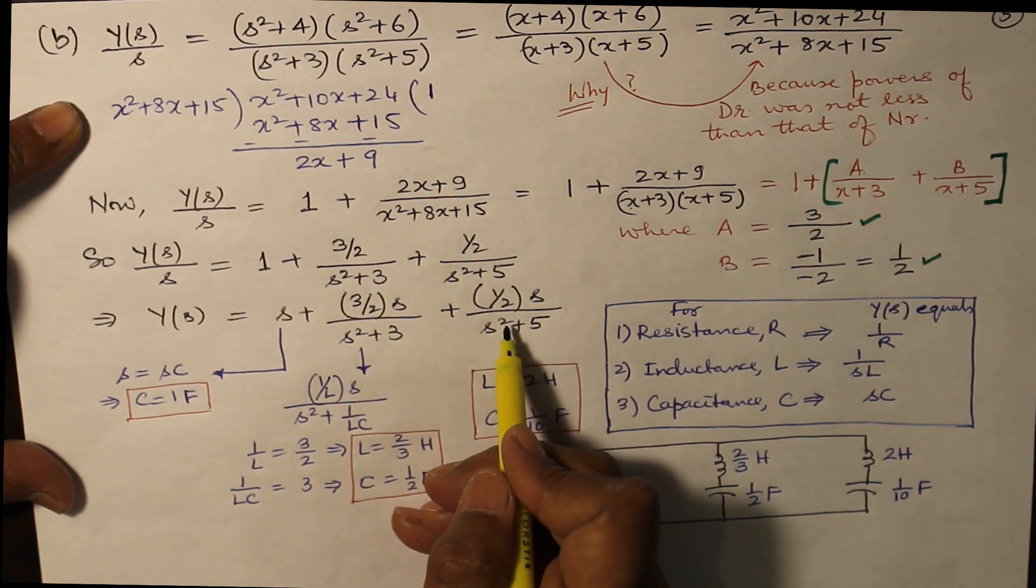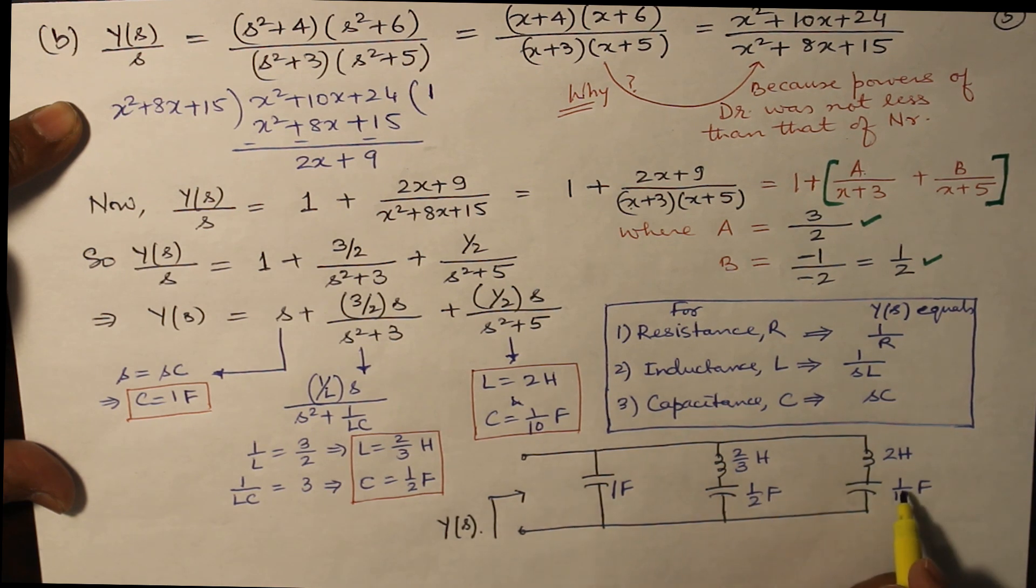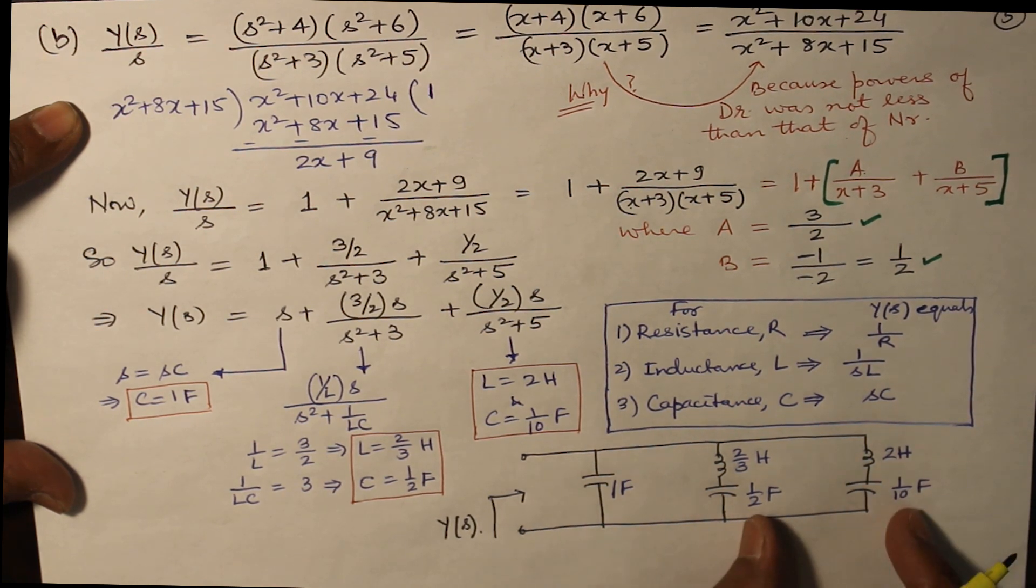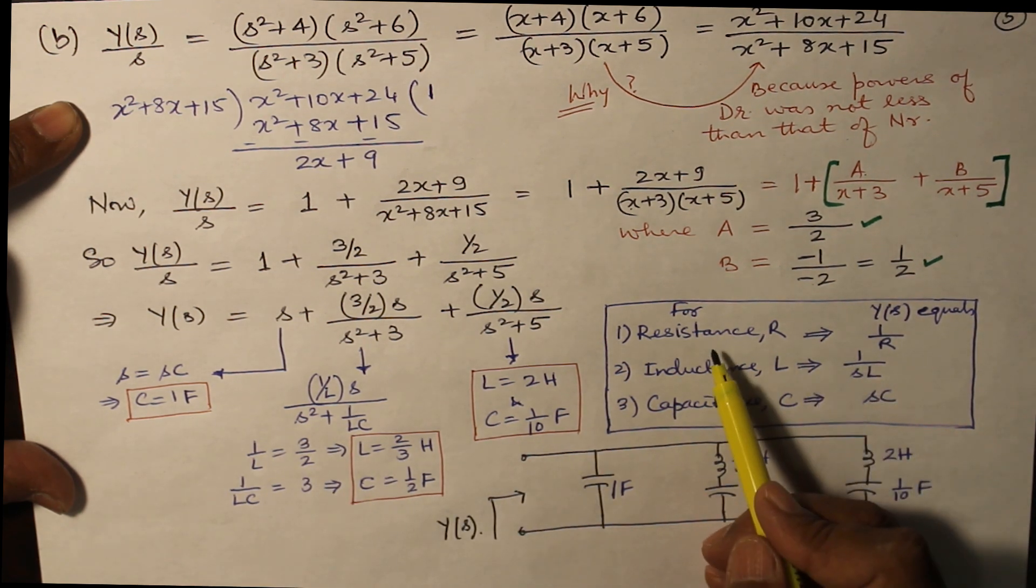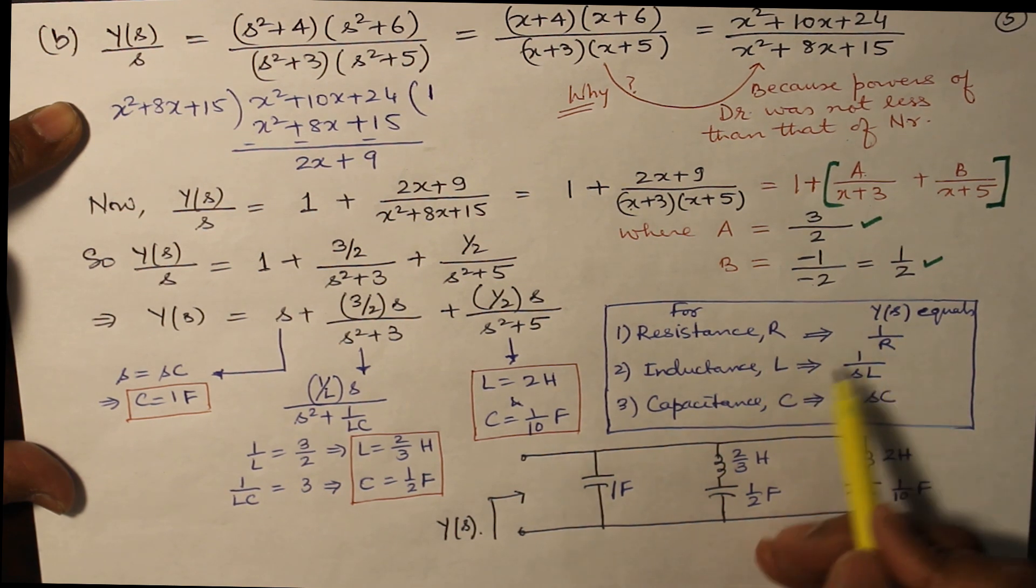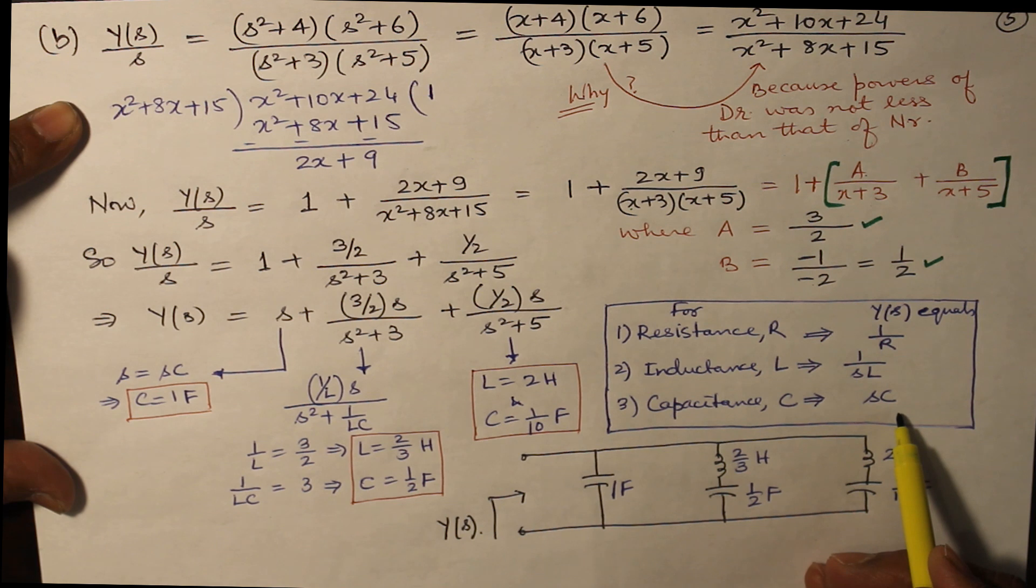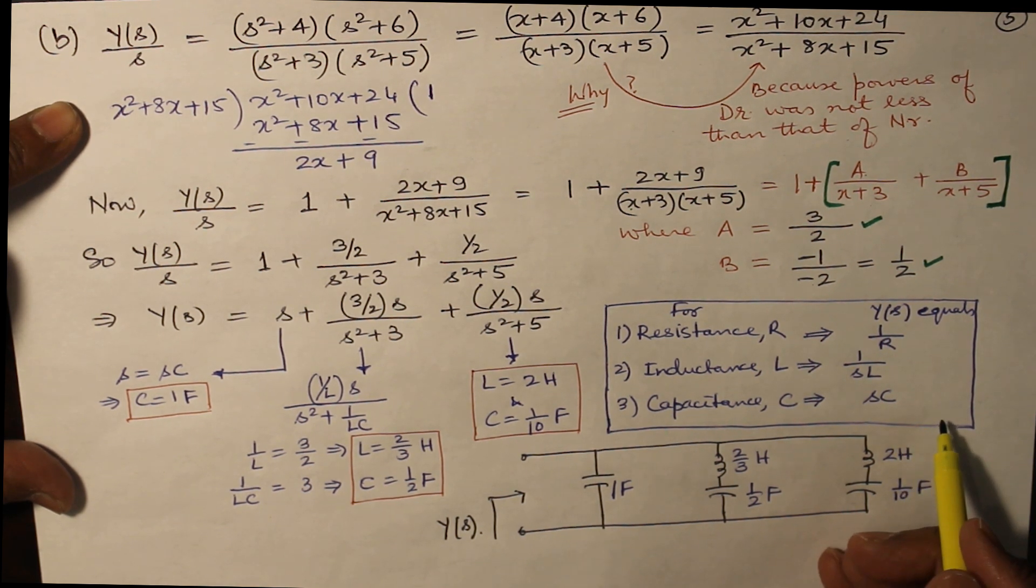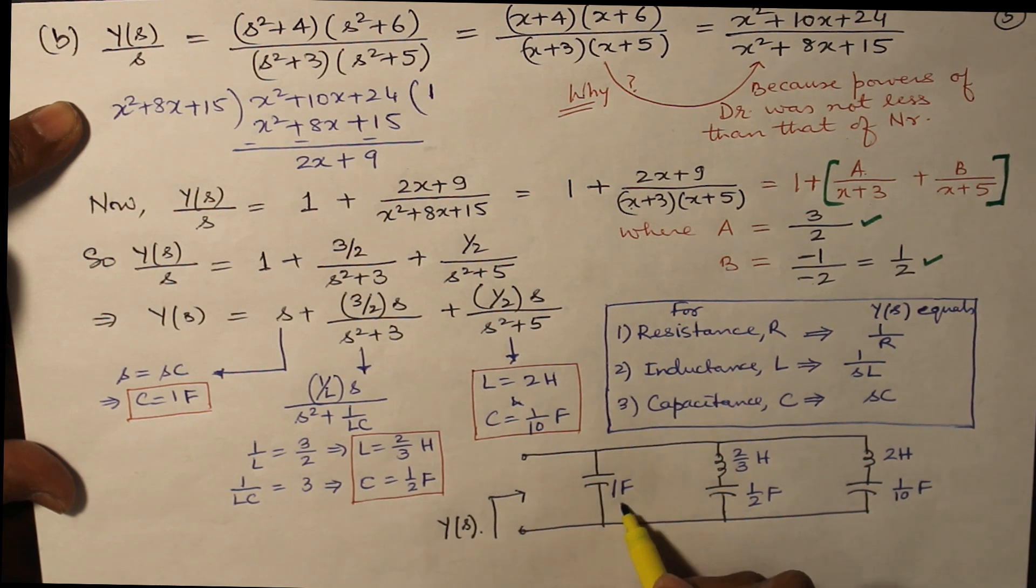There are three terms, so you will have in the final answer three sections, all of them in parallel. Now s is going to give you capacitance of 1 farad. You can have a look at the lookup table. For resistance, Y(s) equals 1/R. For inductance, it is 1/(sL). For capacitance, it is sC. And it is advisable to write down every time on the left or right side of the blank sheet so that you don't make a mistake. So C comes out to be 1 farad.